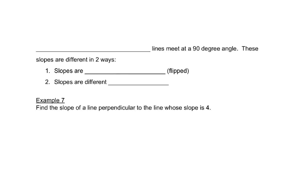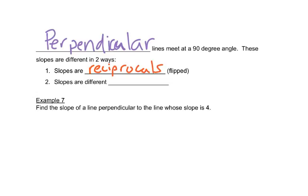Now we'll talk about perpendicular lines. Perpendicular lines meet at a 90 degree angle. These slopes are different in two ways. The first is that the slopes are reciprocals. That means that they're flipped. The denominator goes to the numerator, the numerator goes to the denominator. The slopes also have different signs.